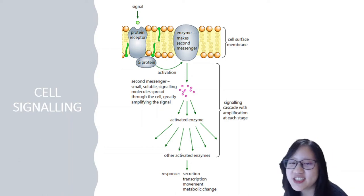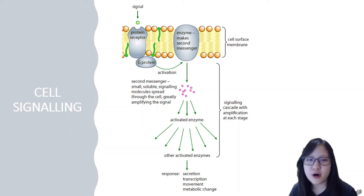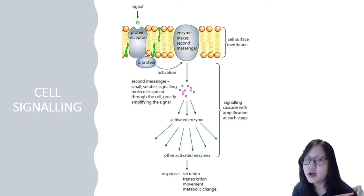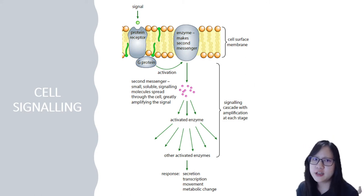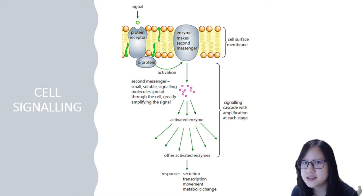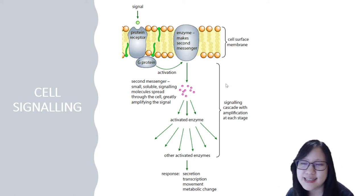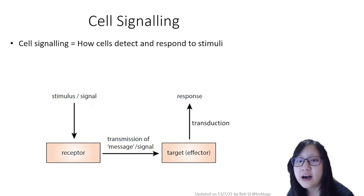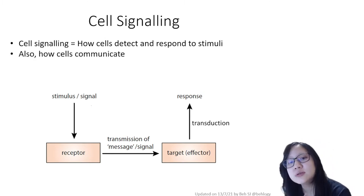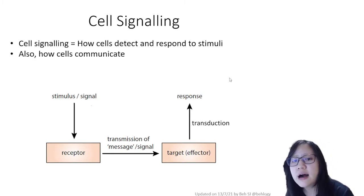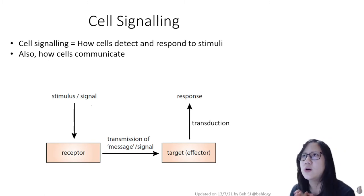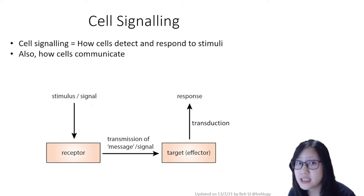Hello everyone and welcome to chapter 4 part 2: cell signaling. This picture is really a summary of what we're going to learn today, but don't worry about it — we'll go through it step by step. Cell signaling is how cells detect and respond to stimuli, and also how cells communicate with each other — how cell A tells cell B what to do.